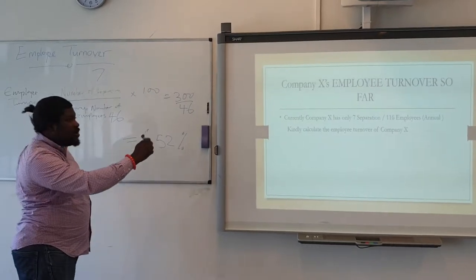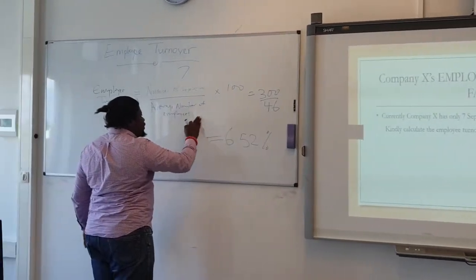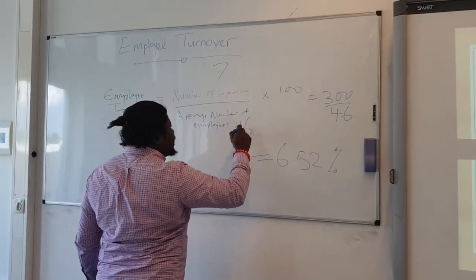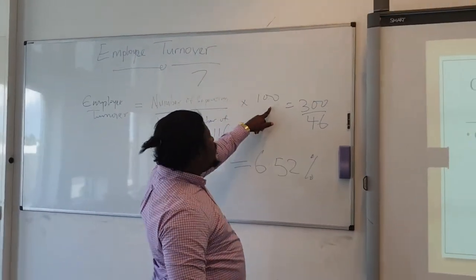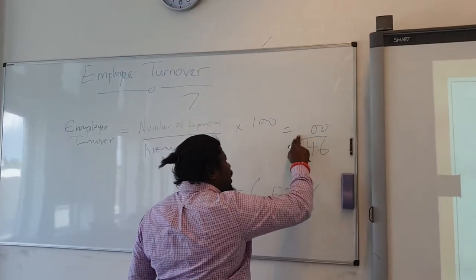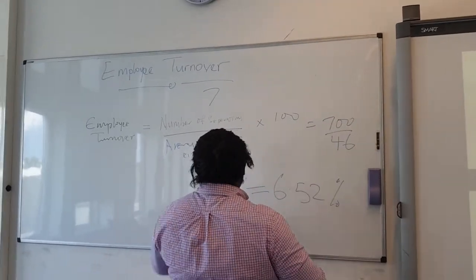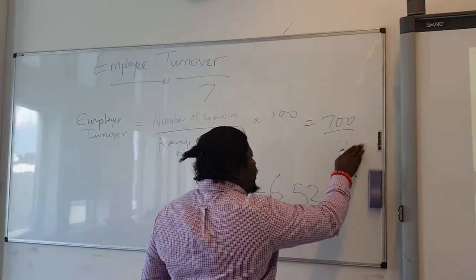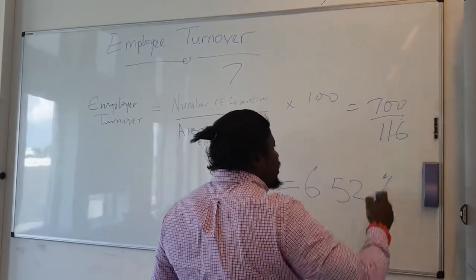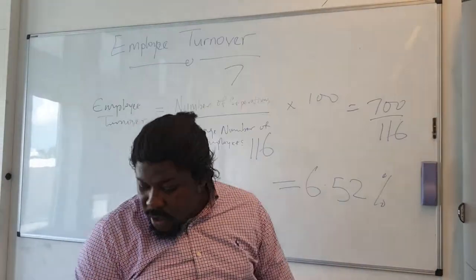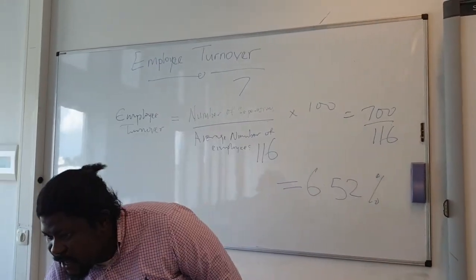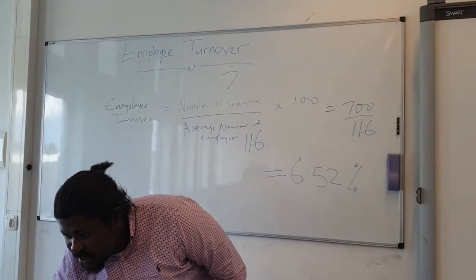How many people do we have in the organization? 116. So the calculation is: 7 × 100 = 700, and then 700 divided by 116. If you work this out on your calculator — let me show you on screen.